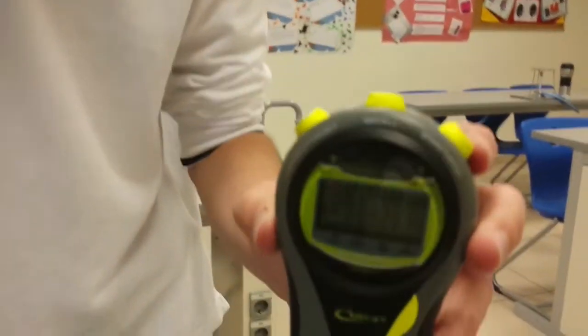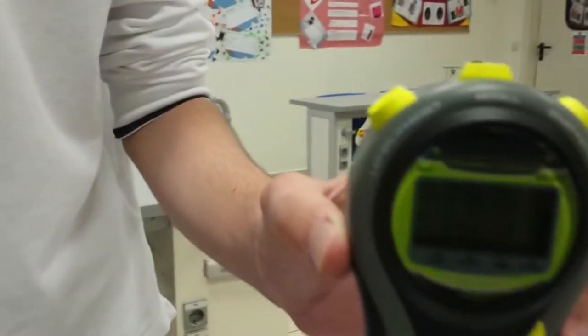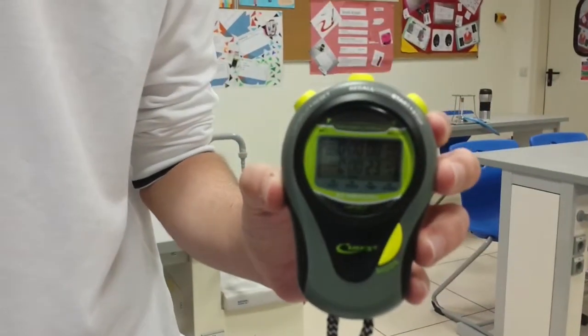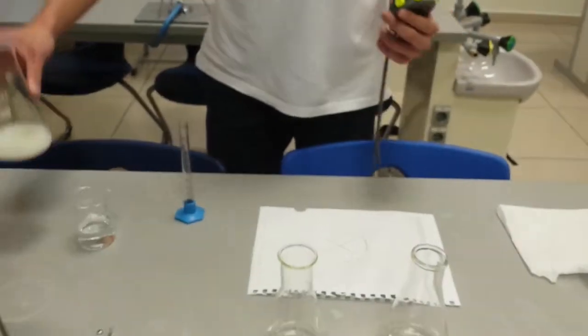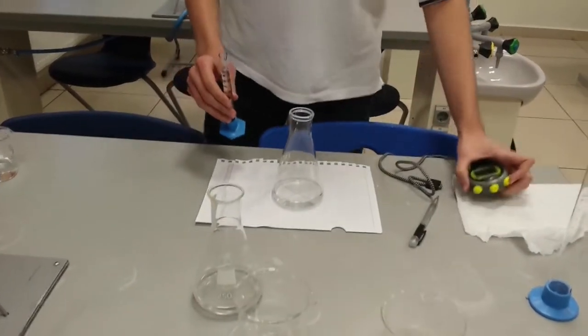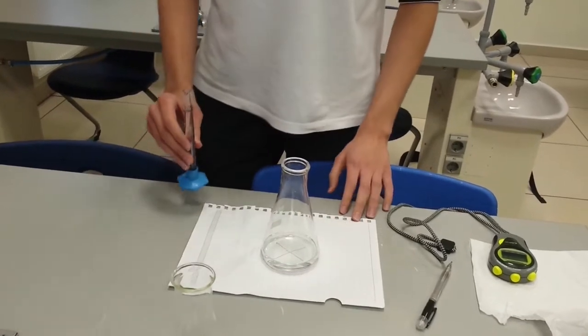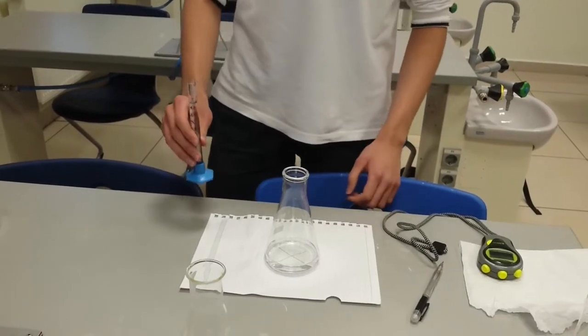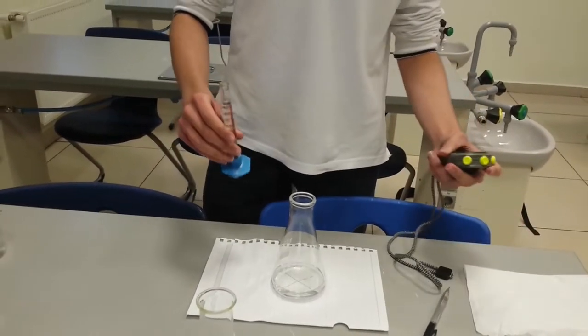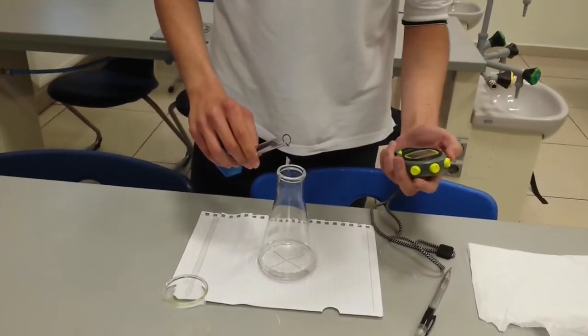Now I have 40 milliliters of sodium thiosulfate and 10 milliliters of distilled water so that I can decrease the concentration. I will add now the 10 milliliters of hydrochloric acid and let's see what happens.